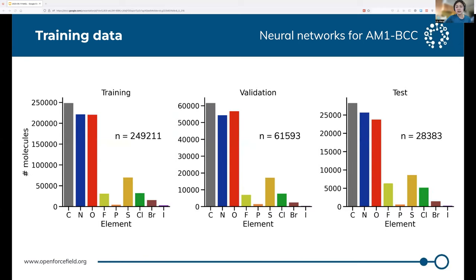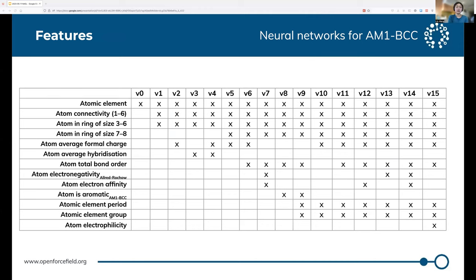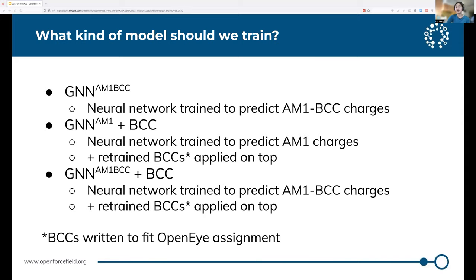We wound up with a data set with a decent spread over the elements. We also looked at a number of different input features, but in the interest of time I won't go into that too much. Instead, I'll focus on showing our latest model and answering one key question: what should we train our model to actually produce? Because we can get AM1BCC charges in a few ways. We can fit directly to predict AM1BCC charges. We could also ask a neural network to predict AM1 charges and then assign our own bond charge corrections on top later. And finally, we can see if adding additional BCCs on top of the AM1 charges already predicted gives us better results.